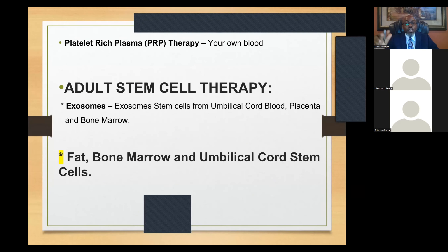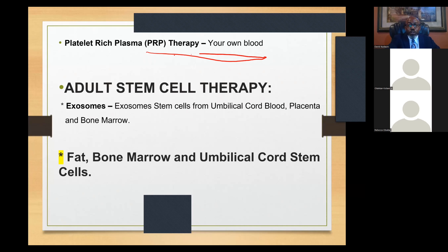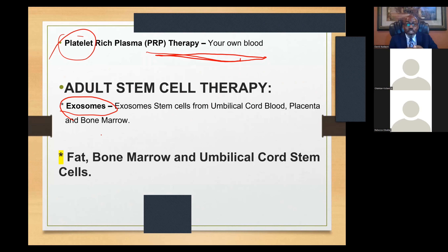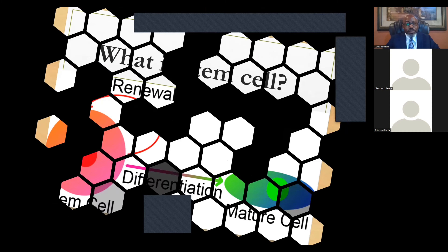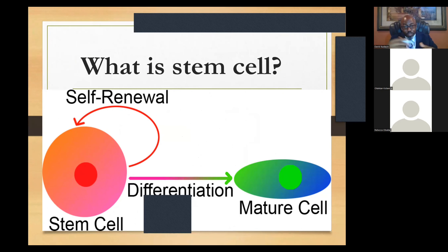We have spoken about PRP and exosomes. Now we are going to talk about fat, bone marrow, and umbilical cord stem cells — adult stem cell therapy. PRP is from your own blood using platelets that have growth factors. Exosomes are extracted from cells but are not cells themselves. Now we discuss the actual cells. A stem cell is a cell inside the body that can multiply or differentiate — all of us came from one fertilized ovum that differentiated into our head, legs, organs, and so on.